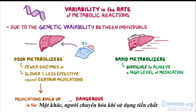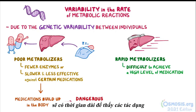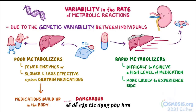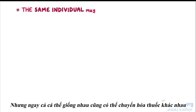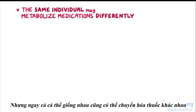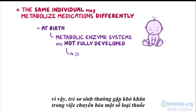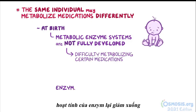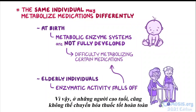On the other hand, a poor metabolizer taking a prodrug that needs to be metabolized into its active form will have a harder time seeing any effect, while ultra-rapid metabolizers will be more likely to experience side effects. Even so, the same individual may metabolize medications differently. At birth, metabolic enzyme systems aren't fully developed, so newborns typically have difficulty metabolizing certain medications. But as we age, enzymatic activity falls off again, so elderly individuals can't metabolize medications quite as well either.